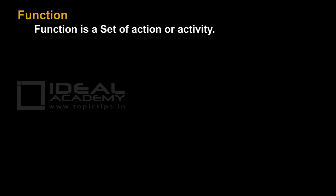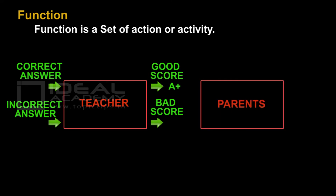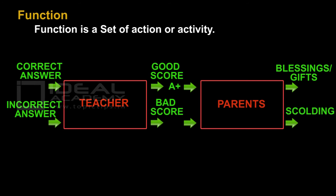Let's take an example of a repetitive function, where the input from one function also goes to another function. We will take one more function called parents. If you give correct answers to the teacher, the teacher gives you a good score, and when you give that good score to your parents, you will get blessings or a gift. If you give incorrect answers, the teacher gives you a bad score, and when you give that bad score to the parents, you will get scoldings. So these two functions — teacher and parents — are related.